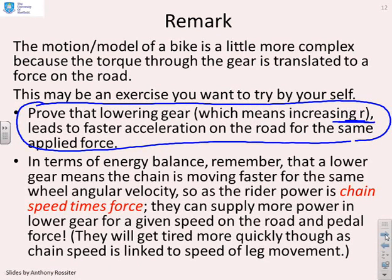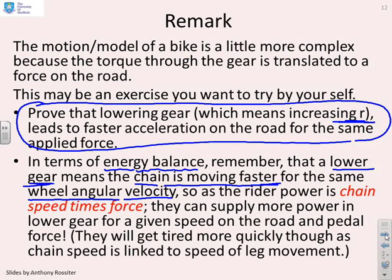Another thing you might want to think about is energy balance. When the cyclist lowers the gear, the chain has got to move faster in order to get the same wheel angular velocity. The power supplied by the rider is the chain speed times the force applied. If the chain is moving faster and the force is the same, then the cyclist is supplying more power. The key thing is that in lower gear, because the chain speed is faster, the cyclist can supply more power for the same force. Obviously they will get tired if they're supplying more power, but there's a key observation: at lower gear you can supply more power because the force you can supply is fundamentally limited.